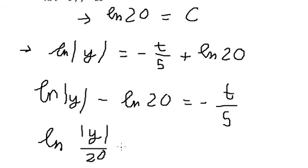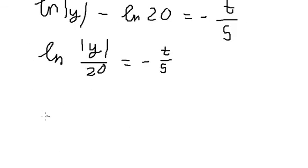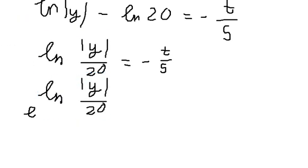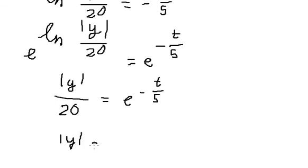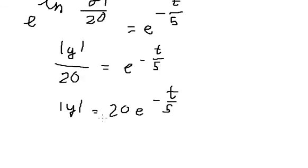Rearranging gives ln(|y| / 20) equals negative t over 5. Exponentiating both sides, the absolute value of y over 20 equals e^(negative t over 5). Since y represents the weight of salt, y must be positive, so y equals 20 times e^(negative t over 5).